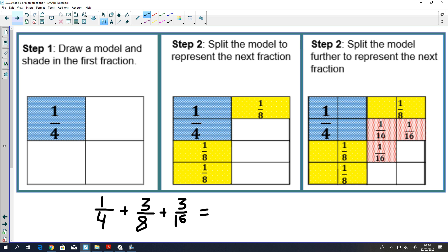Then all we have to do is count how many sixteenths there are: 1, 2, 3, 4, 5, 6, 7, 8, 9, 10, 11, 12, 13. So 13 sixteenths, according to the area model.